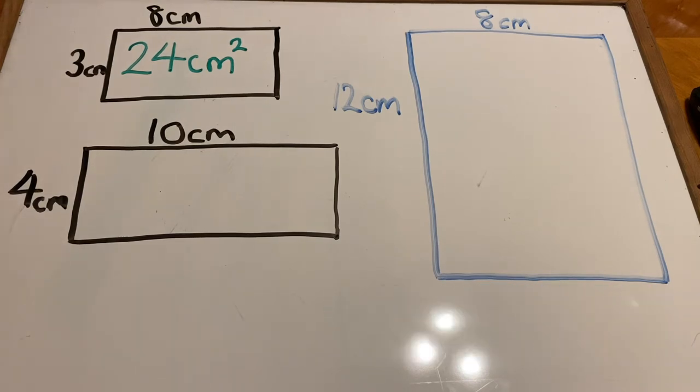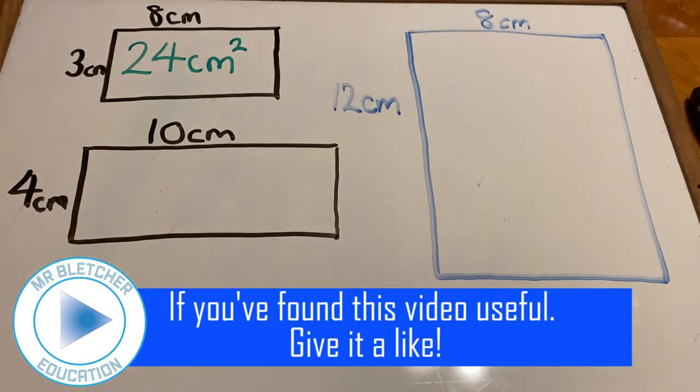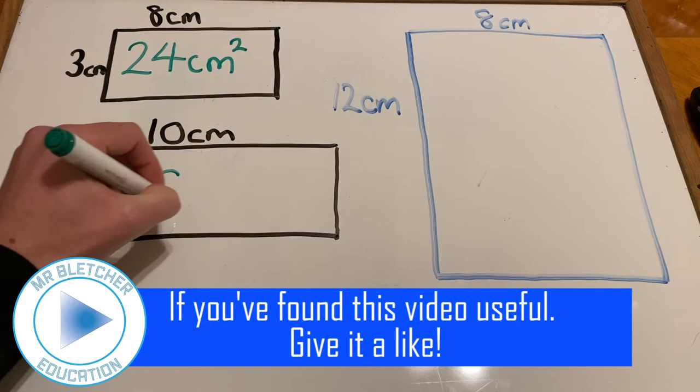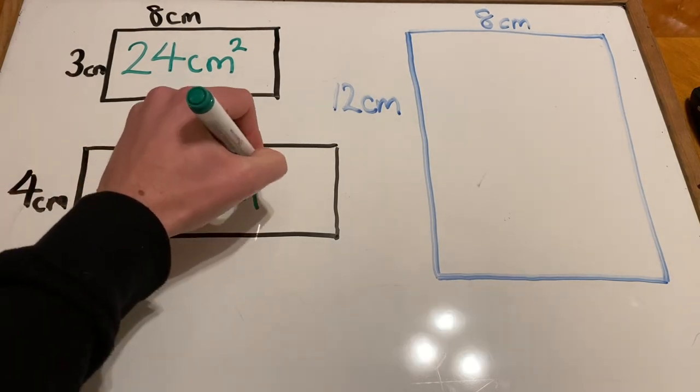Let's take a look at another example. The width of this rectangle is 4cm and the length is 10cm. So, 4 multiplied by 10 is 40cm squared.